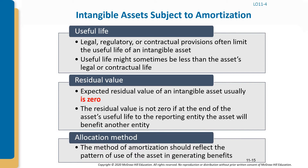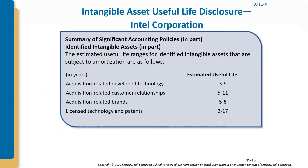We need to be careful about the useful life of intangible assets. The residual value of an intangible asset is normally zero; it is non-zero only if, at the end of the asset's useful life to the reporting entity, the asset will benefit another entity. The allocation method is similar to depreciation and is called amortization.